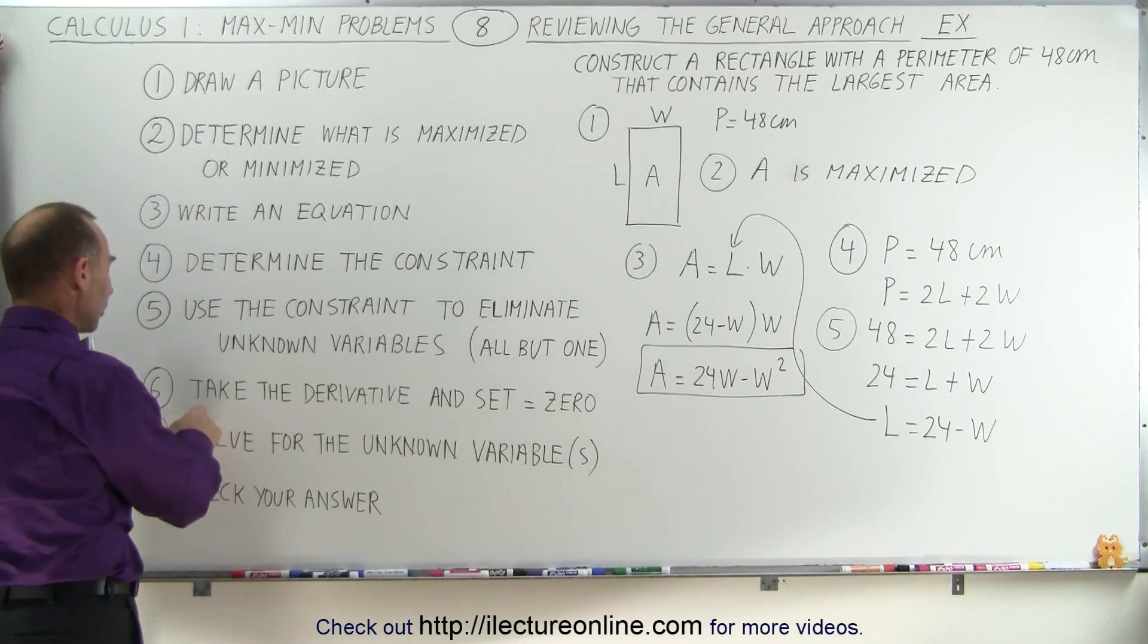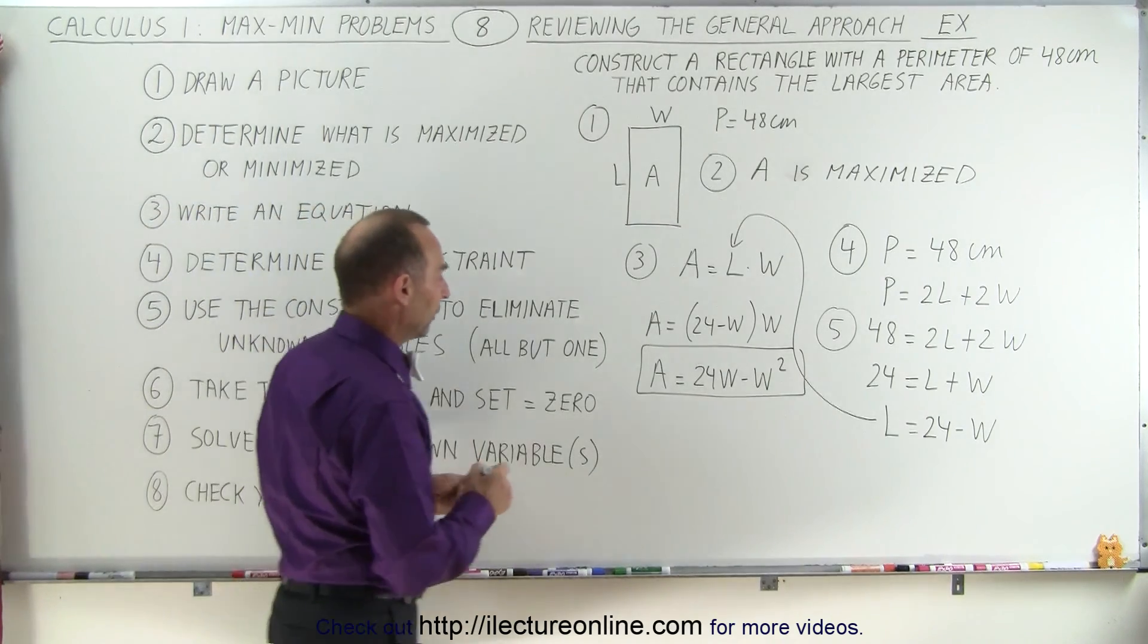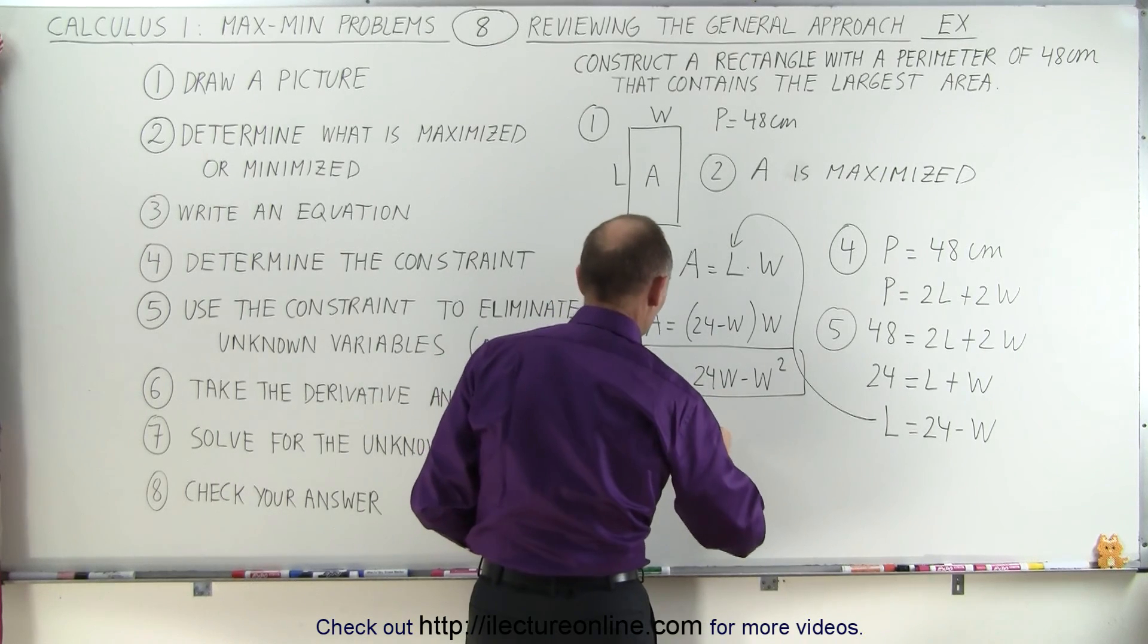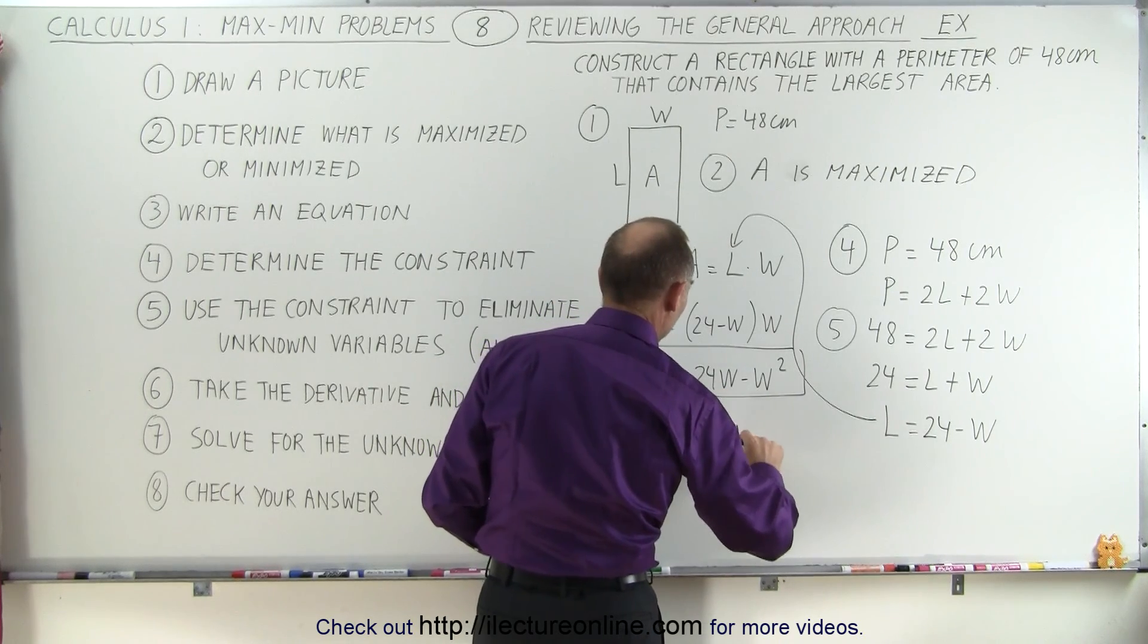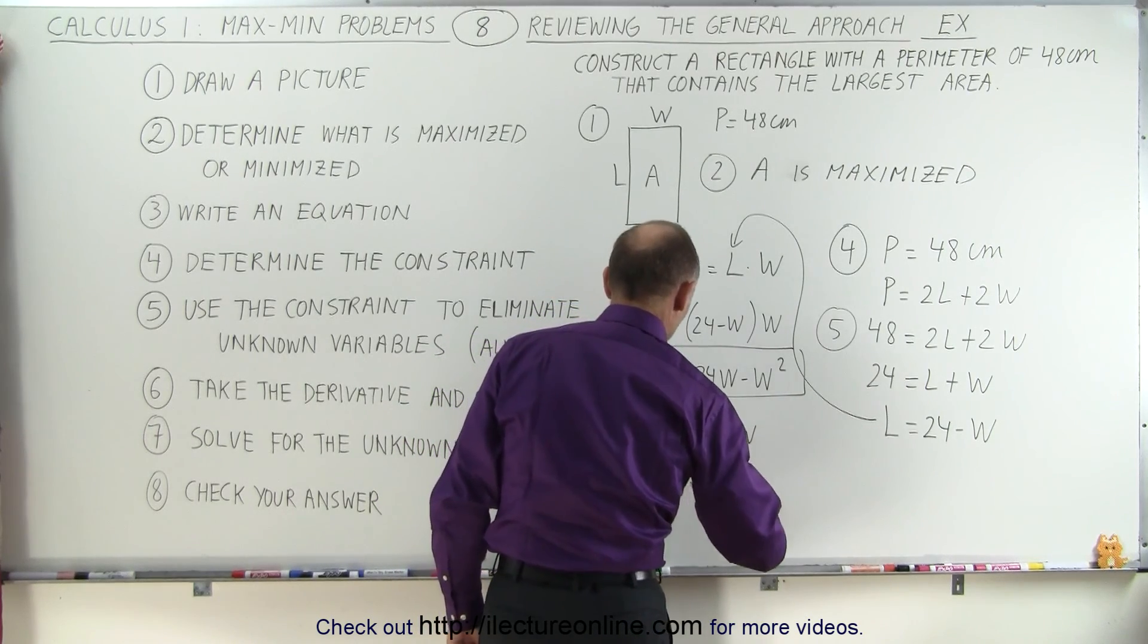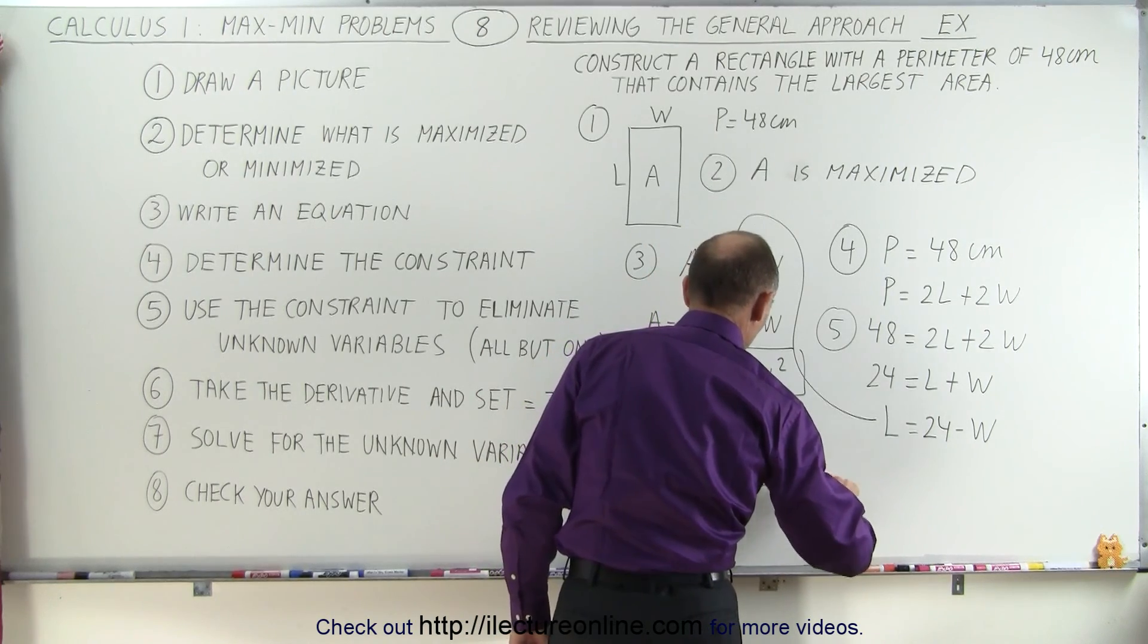Next, what we're going to do is we're going to take the derivative now of that function and set that equal to zero. So A prime in terms of W is 24 minus 2W, and then we're going to set A prime equal to zero, which means we're going to set that equal to 24 minus 2W.